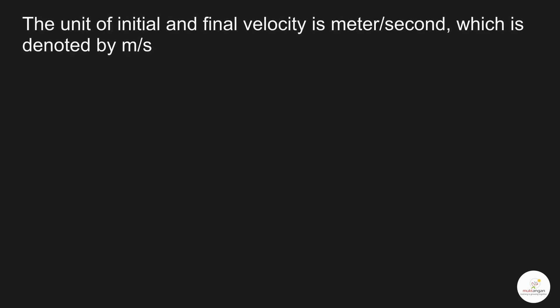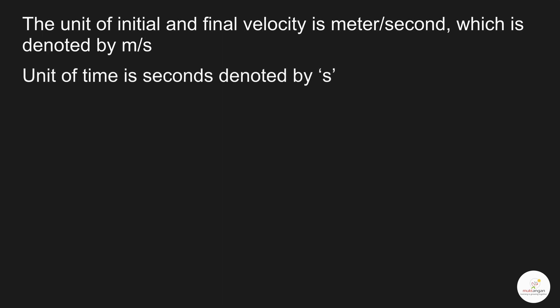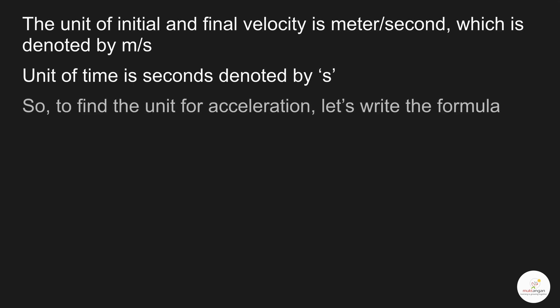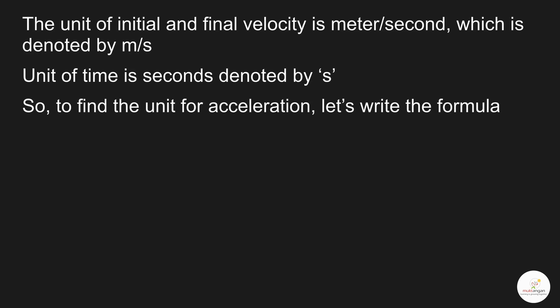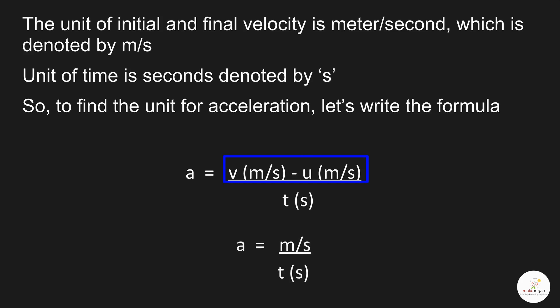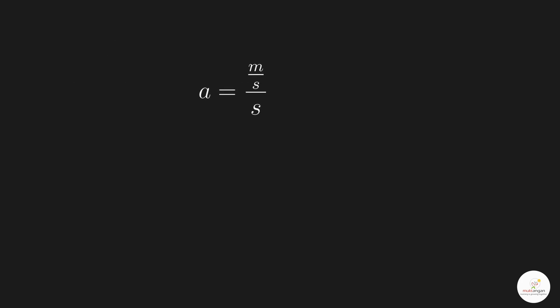The unit of time is seconds, denoted by small s. To find the unit for acceleration, let's write the formula: A is equal to V (meter per second) minus U (meter per second), upon T (seconds). In the numerator, we are calculating the change in velocity, so the answer of the numerator will also be in meter per second. After we get the change in velocity, we divide it by the time: m/s divided by s equals m/s multiplied by 1/s, which gives meter per second squared. So, the unit of acceleration is meter per second squared.